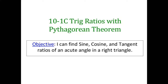Hello, today we're going to be looking at lesson 1c for unit 10. We're going to be looking at trig ratios and we're going to have to use the Pythagorean theorem today. Our objective says: I can find the sine, cosine, and tangent ratios of an acute angle in a right triangle. But we're going to have one missing side today and we're going to have to use the Pythagorean theorem.